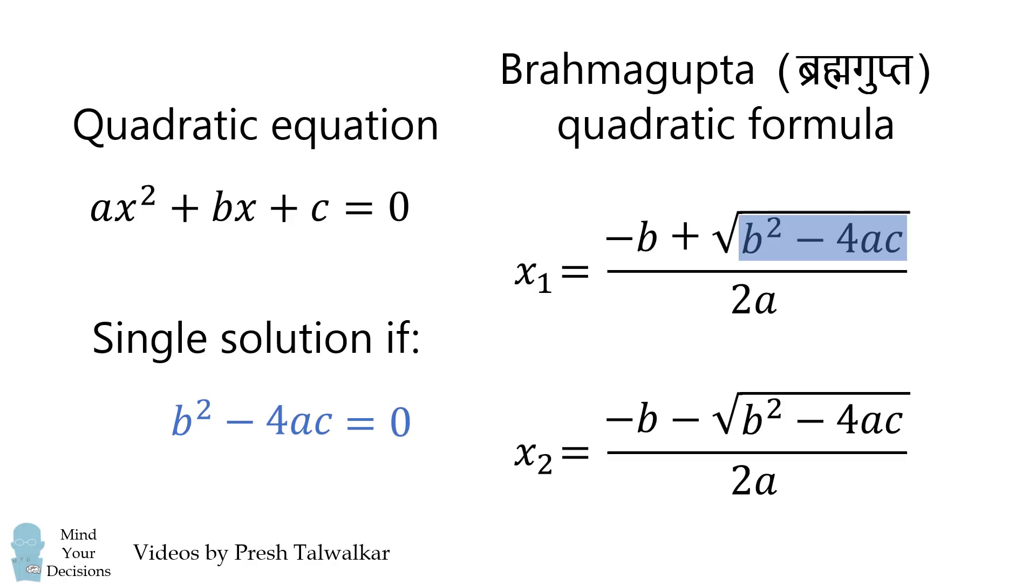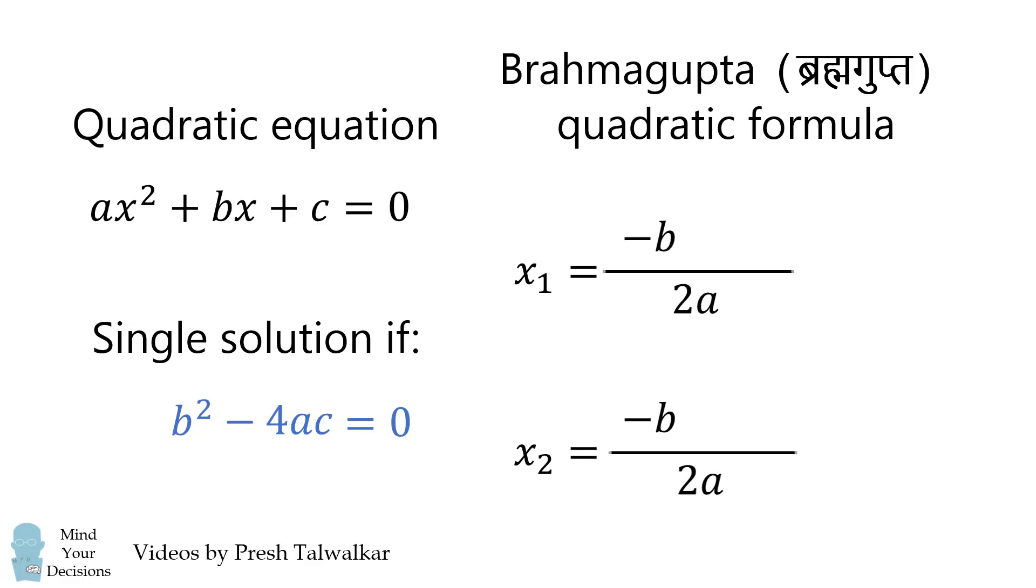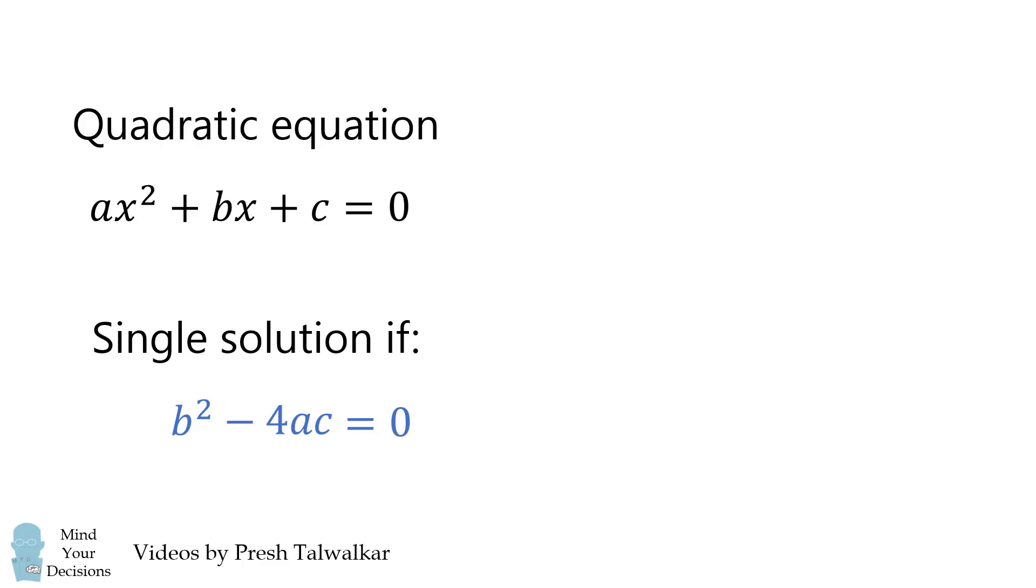In that case, the discriminant will vanish and the square root term will vanish, so both of the solutions will be equal to negative b over 2a. We'll use this lesson to solve our problem.